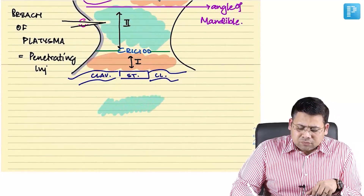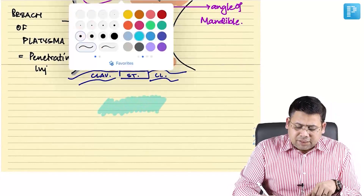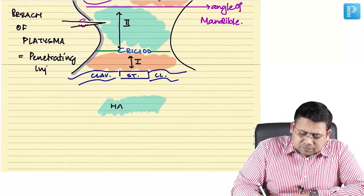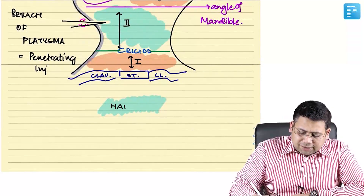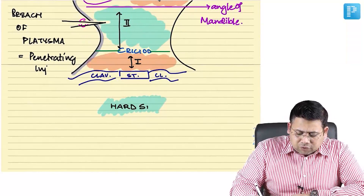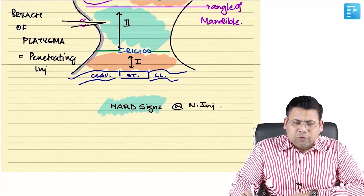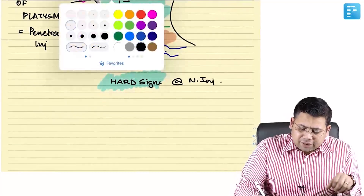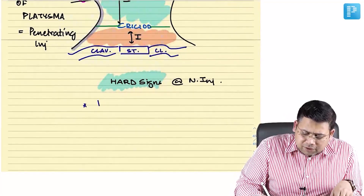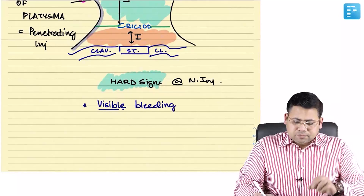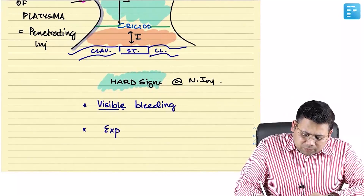It is very important to rule out vascular injury. There are signs known as hard signs and soft signs of neck injury. The hard signs are direct signs indicating vascular injury.